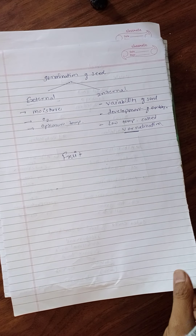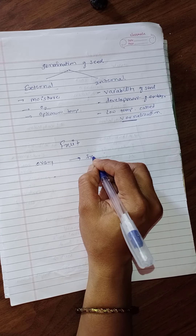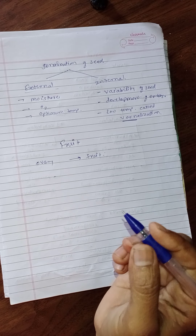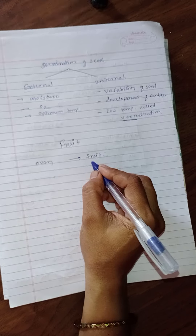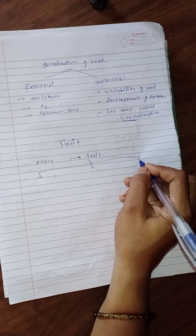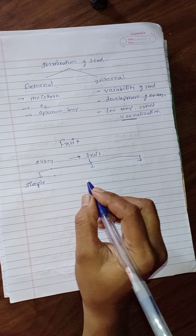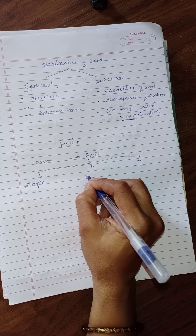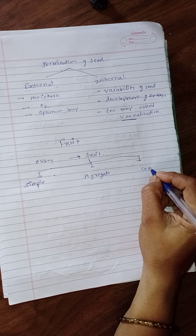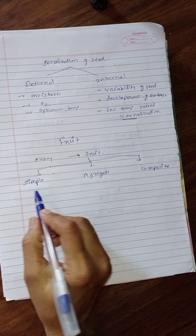Just as ovule is converted into seed, the ovary is converted into fruit. Fruit is classified into three categories: first is simple fruit, second is aggregate fruit, and third is composite fruit.